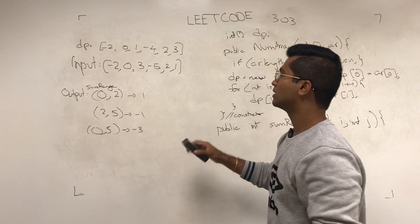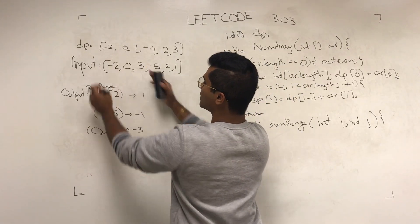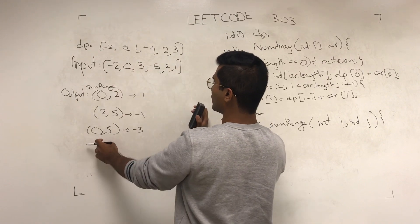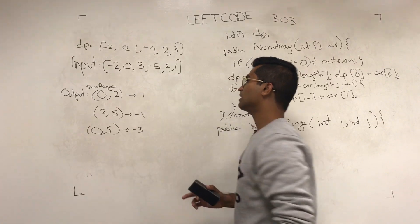What they want is the sum between, say for example, 0 and 2. They want this sum, or they want the sum of 0, 1, 2. These are the outputs. Now, the answer is pretty straightforward.